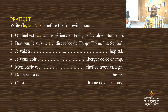Sentence three: Je vais à l'hôpital. We learned that words beginning with a silent H are accompanied by the definite article l'apostrophe. Hôpital clearly begins with a silent H, so we put l'apostrophe — Je vais à l'hôpital. I am going to the hospital.